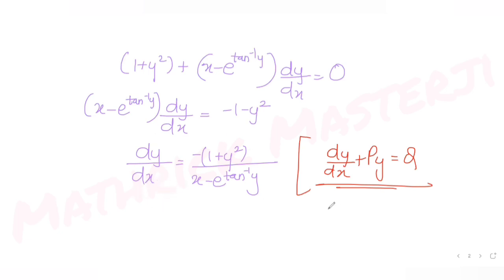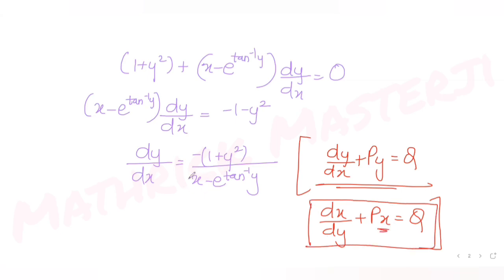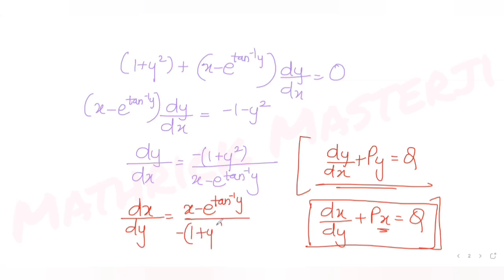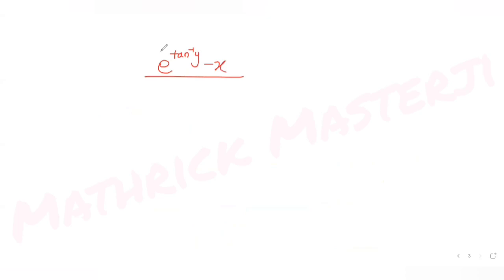So we convert the equation to the form dx/dy + Px = Q, swapping roles of x and y. Taking the reciprocal gives dx/dy = (x − e^(tan⁻¹y)) / (−(1 + y²)), and absorbing the minus sign into the numerator gives dx/dy = (e^(tan⁻¹y) − x) / (1 + y²).